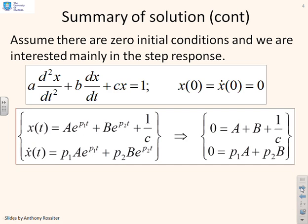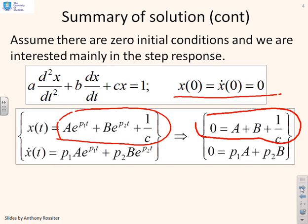I've substituted my solution from the previous page, Ae^(p₁t) plus Be^(p₂t) plus 1/c, and I've substituted in the initial conditions: x(0) equals ẋ(0) equals 0. If I do that first one, I get 0 equals A plus B plus 1/c. If I differentiate x(t) and then substitute in the initial condition, I get 0 equals p₁A plus p₂B. We now have two linear simultaneous equations in the two unknowns, capital A and capital B.